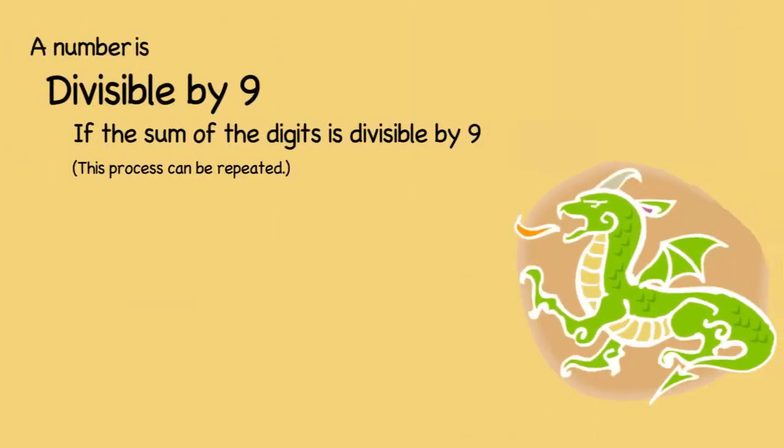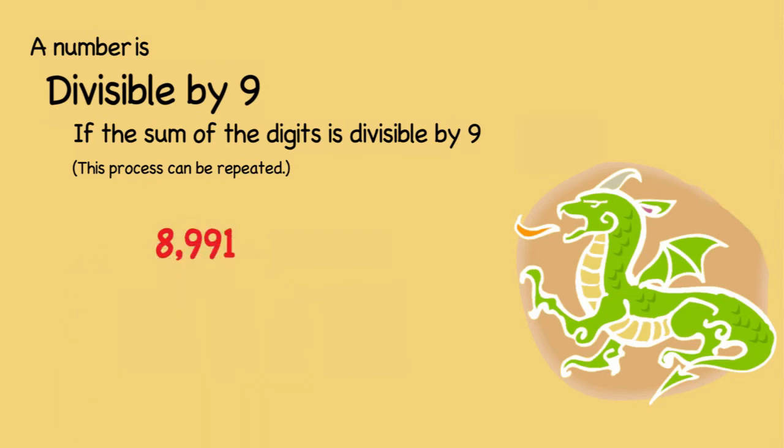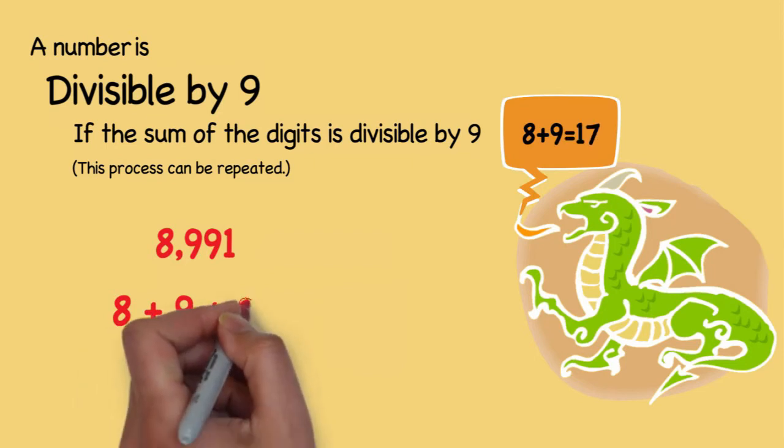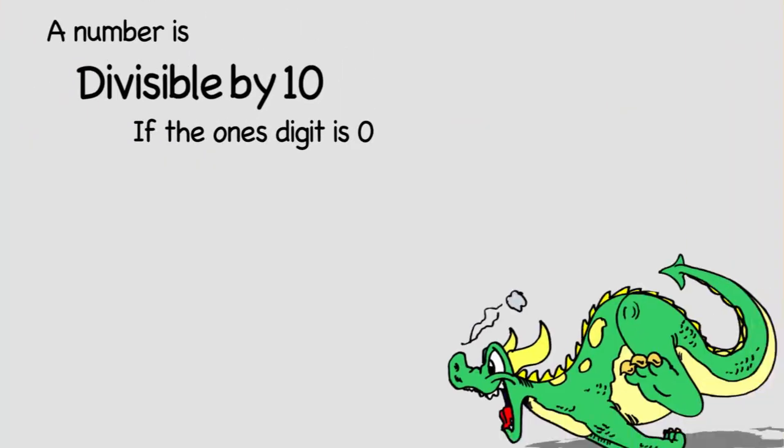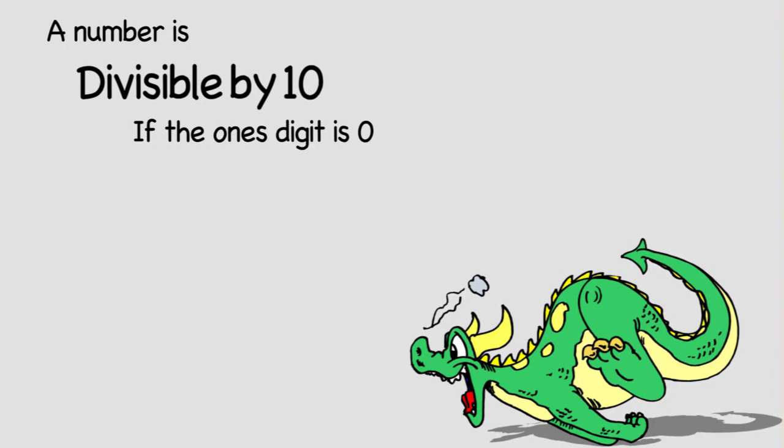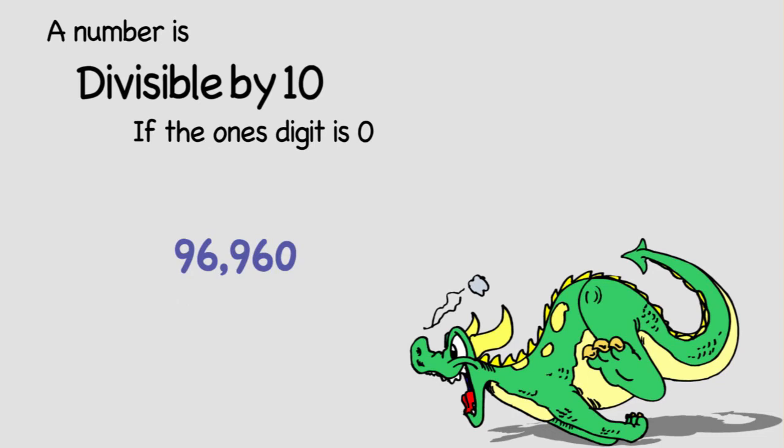Next up, we have 9. Our example number is 8,991. The method for 9 is similar to 3. You add up all the digits, and you see if it's divisible by 9. 8 plus 9 is 17, plus 9 is 26, plus 1 is 27, which we all know is divisible by 9. Okay, next we have 10. Our example number is 96,960, which we all know is divisible by 10, because it ends in a 0. All numbers that end in 0 are divisible by 10.